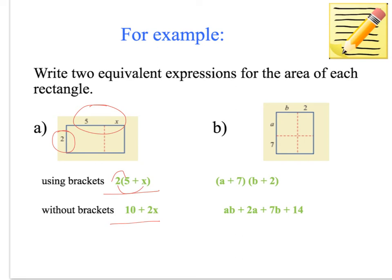Alright, so this second one is a little bit harder. We've got 7 plus a here. We need to add 7 and a together to work out the length of this side, and we need to add b and 2 together to work out the length of this side. However, they're both in brackets. What do we do here?